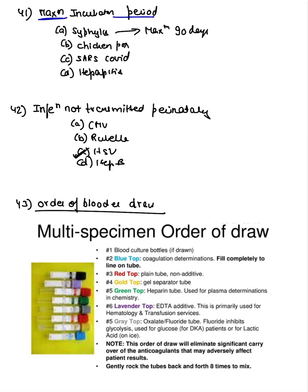Maximum incubation period question: syphilis, caused by Treponema pallidum, has an incubation period of 9 to 90 days. For perinatal infections, CMV causes periventricular calcification; rubella also transmits perinatally; hepatitis B can transmit; HSV is not typically transmitted perinatally.